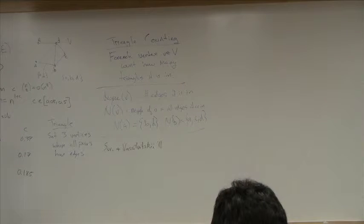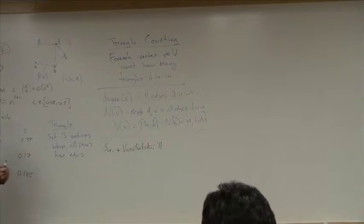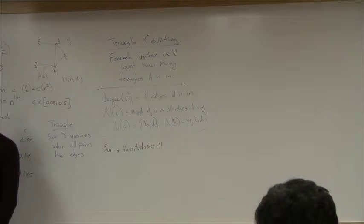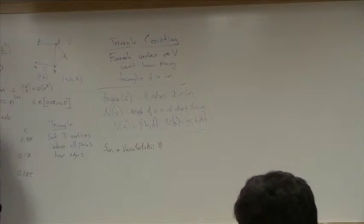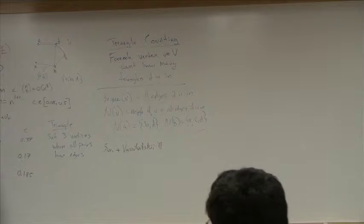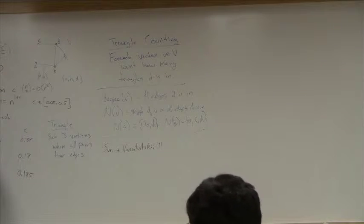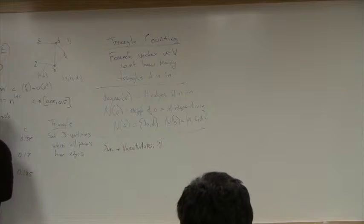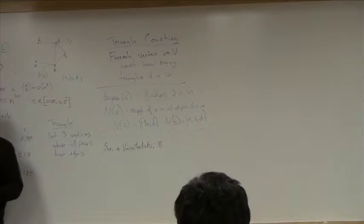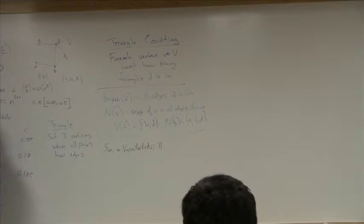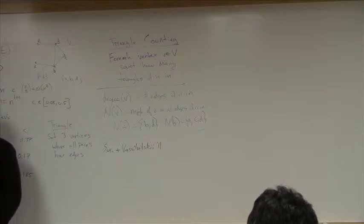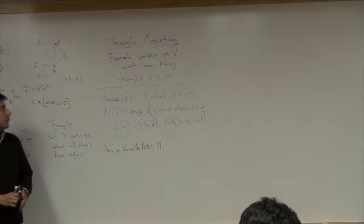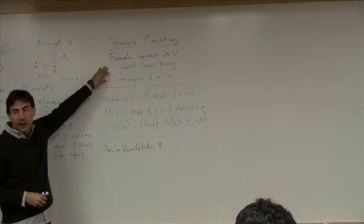One thing to note before jumping in: MapReduce is best used when the input is really large and you want to parallelize. Also, the output of the last reducer should be a fairly large set. If you want a single answer like the average of a large set of numbers, MapReduce is probably not the right tool. You want the output also to be large. In this case, for each vertex counting triangles, if you have 65 million vertices, the output is roughly 65 million.